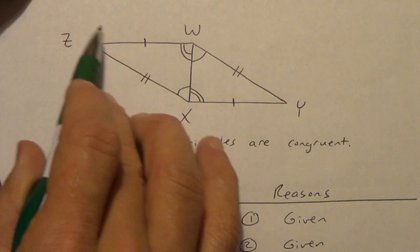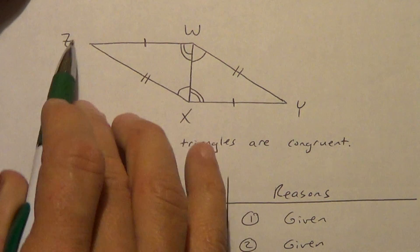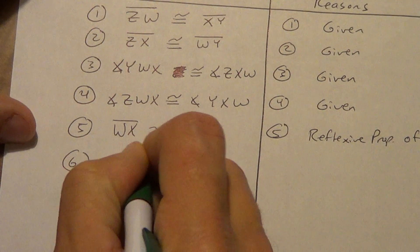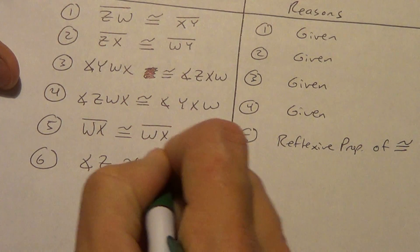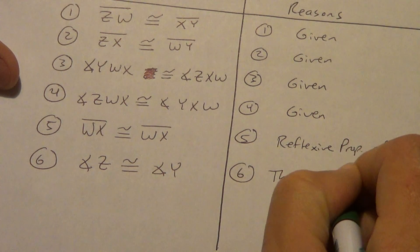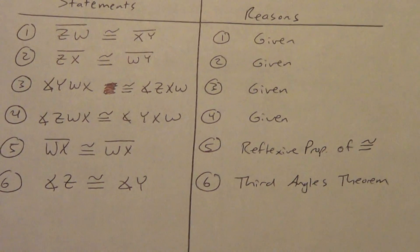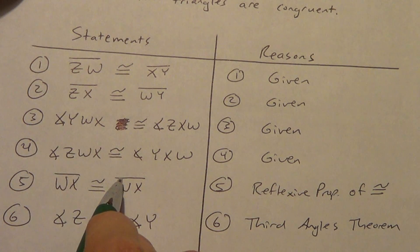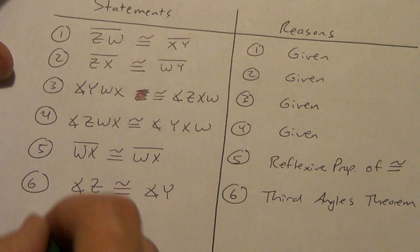Now, I can say this angle by just saying angle Z. Remember, we couldn't say this just by saying angle W. It was too confusing. But if I say angle Z, everybody knows exactly which angle I'm talking about. So, angle Z is congruent to angle Y. And our reason is the third angles theorem. Now, are the triangles congruent? We have one set, two set, three sets of sides. One set, two sets, three sets of angles. That's our definition.